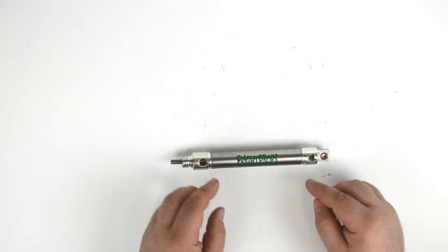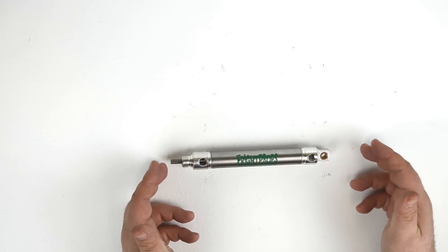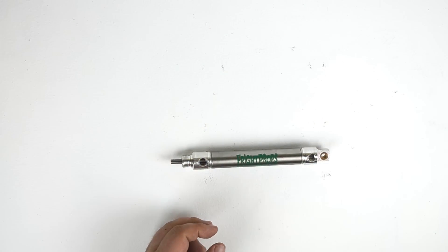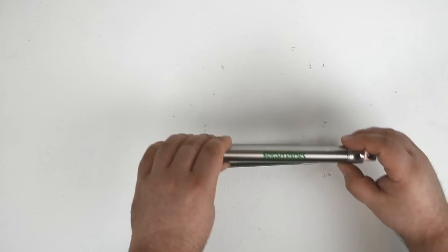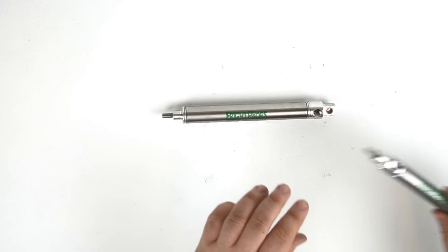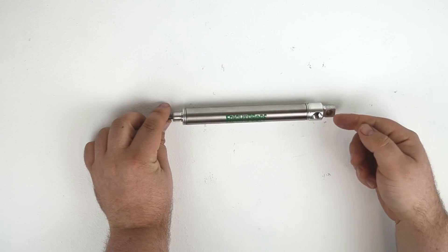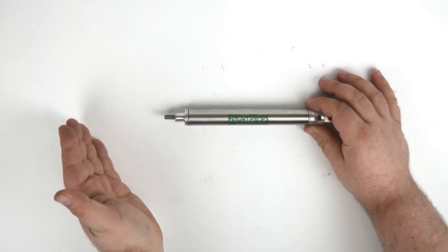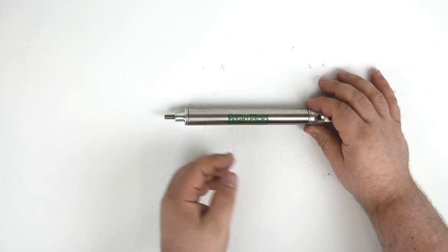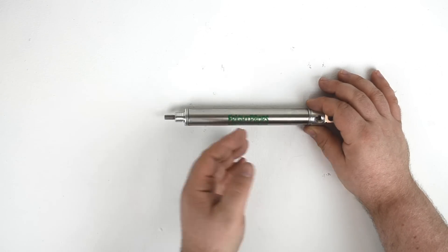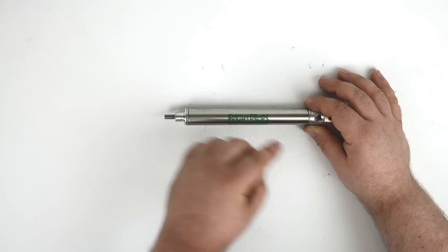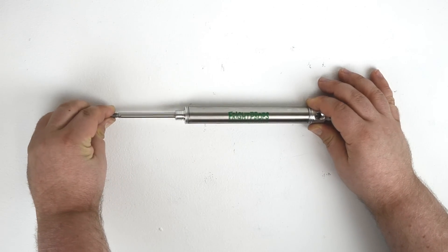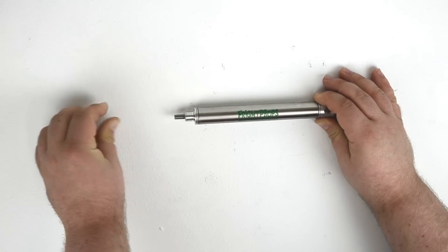Although double acting universal mount cylinders are the most commonly used type of cylinder, they're certainly not the only type. We also offer single acting cylinders. A single acting cylinder has only one air port because it uses the force of an internal spring to return the cylinder rod back to its resting position once the air is cut off. So, the force of air will extend the cylinder, and then the spring will return it.